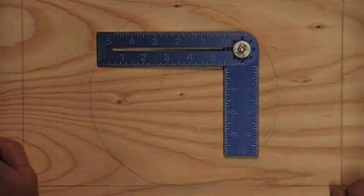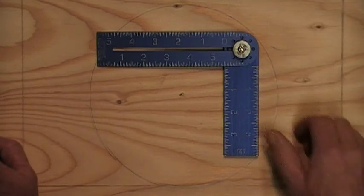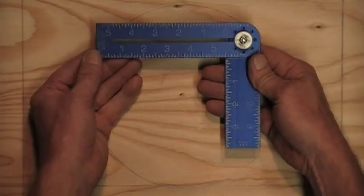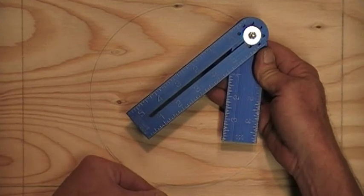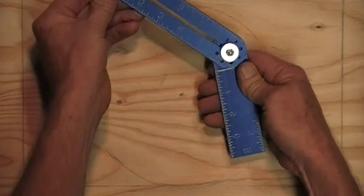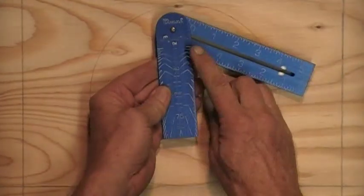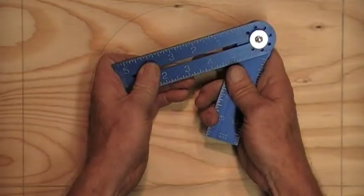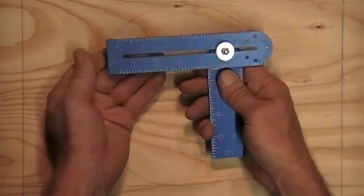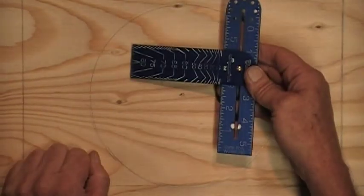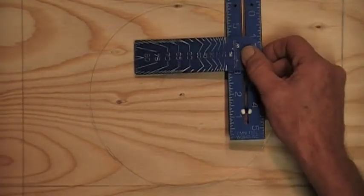So the Omni square is a 90 degree tri square, a 45 and 135 degree square, a bevel square with angle degree read out, a combination square, a T square, and it draws circles up to 12 inches.